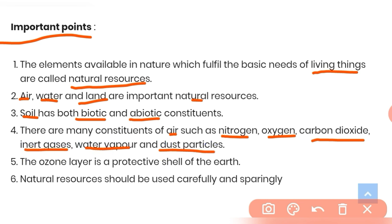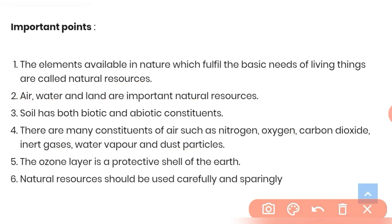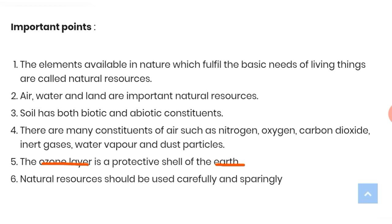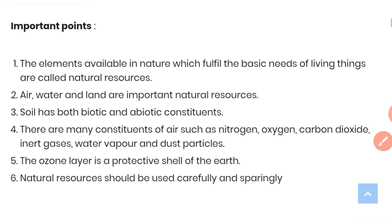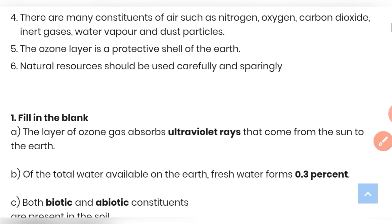The ozone layer is the protective shell of the earth, because it protects us from the harmful ultraviolet rays that come from the sun. Natural resources should be used carefully. Now let's move to the question and answers of this chapter.